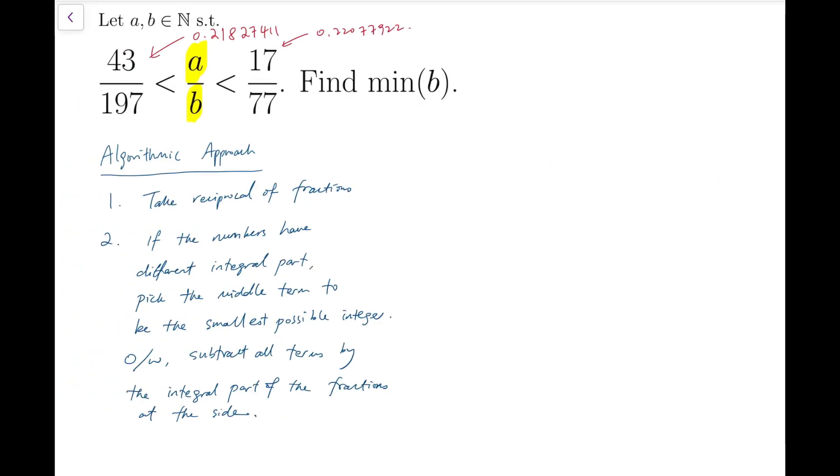So let's run this algorithm and see what we can get. Now at first, we have these fractions. We take reciprocal on all of them. So I have 77 over 17 to be the minimum instead of 197 over 43 because the order will be reversed. So this is less than b over a and then it's less than 197 over 43. Now, the integral parts of the two fractions at the side are both 4. So that means we subtract all fractions by 4. We do not pick an integer straight away. So the fractions become 9 over 17 and 25 over 43. And the middle fraction becomes b minus 4a over a.